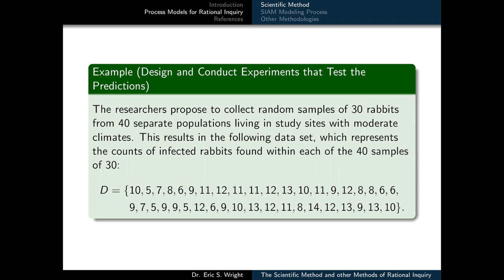The researchers set out to design and conduct an experiment to test their prediction. They proposed to collect random samples of 30 rabbits from 40 separate populations living in study sites with moderate climates. This results in a data set representing the counts of infected rabbits found within each of the 40 samples of 30. There are 40 numbers, and each number represents the number of infected rabbits within that particular sample.